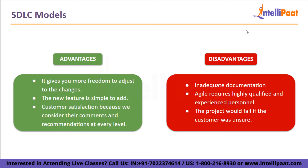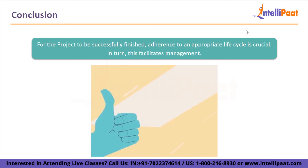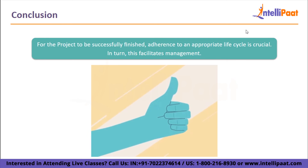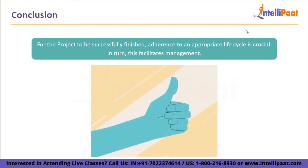Now we have come to the conclusion. For a project to be successfully finished, adherence to an appropriate life cycle is crucial, which in turn facilitates management. Each model of the software development life cycle has its own pros and cons. Elements like requirements, system complexity, project size, cost, and skill limitations can help establish the optimal model for any project. Spiral and agile models, for instance, are best to utilize when requirements are uncertain, because the necessary adjustments can be easily accommodated at any stage.